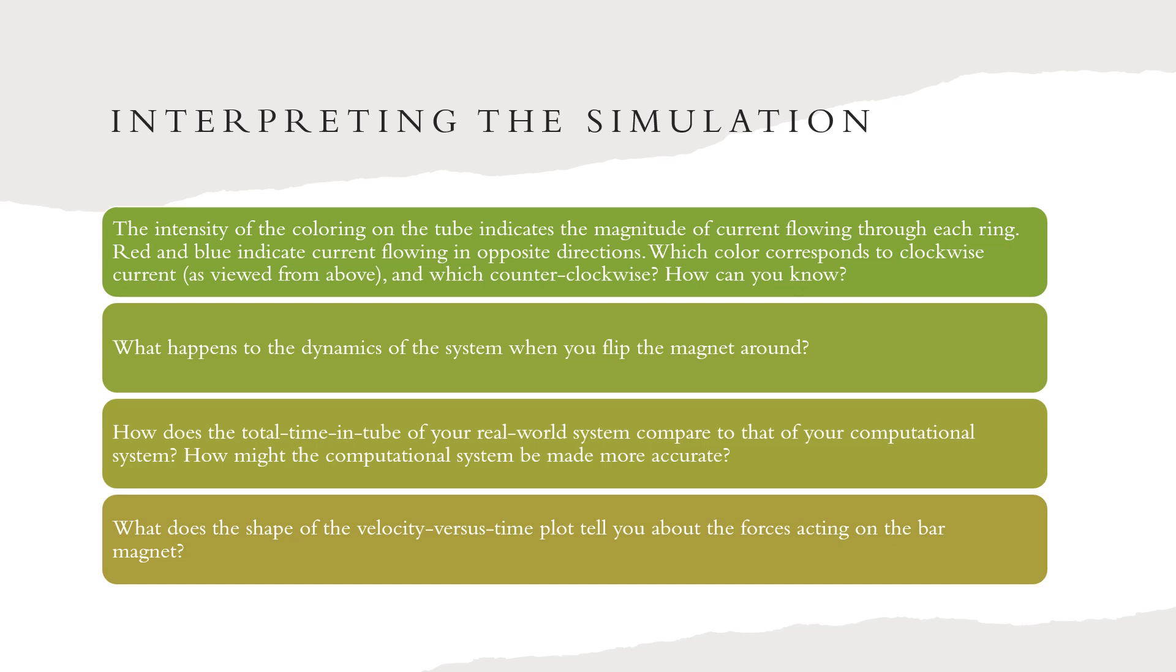How does the total time in the tube of your real world system compare to that of your computational system? How might the computational system be made more accurate? Our times are very close together for this experiment. The computational data could have more rings in the system which would create an even more accurate result. The experimental mu value could have also been found by using a more accurate measurement leading to better overall results.